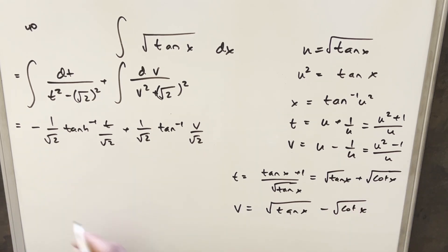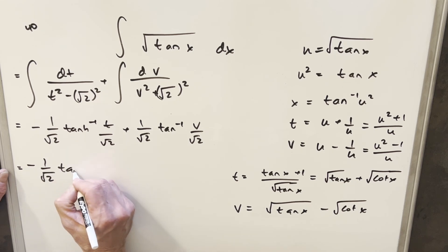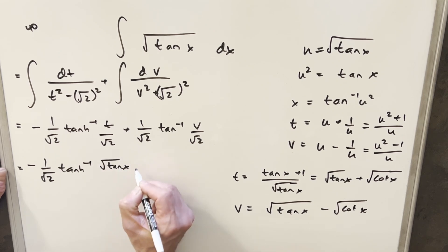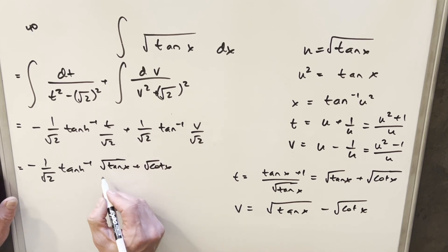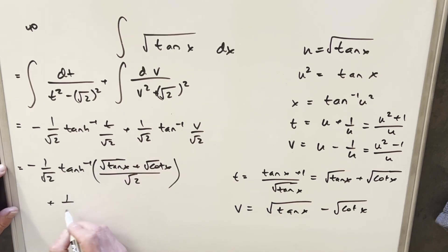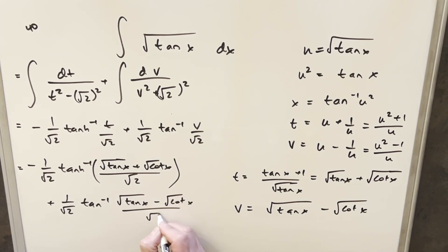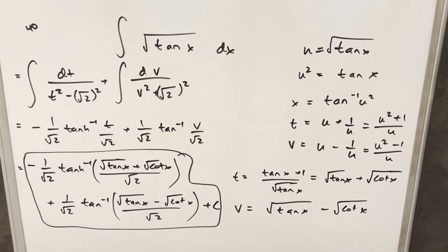So we'll back-substitute with our t and v values. We're going to have minus 1 over square root of 2, times inverse hyperbolic tangent of square root of tan x plus square root of cotangent x, all over square root of 2. Plus 1 over square root of 2, times arctan of square root of tan x minus square root of cotangent x, over square root of 2. Plus C. Good problem from MIT in 1991. Thanks everyone for watching, have a good day.